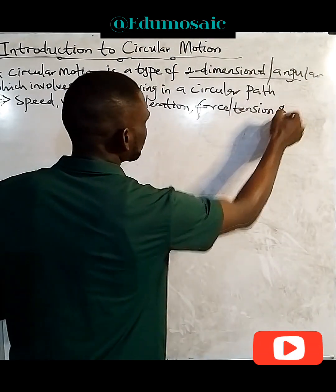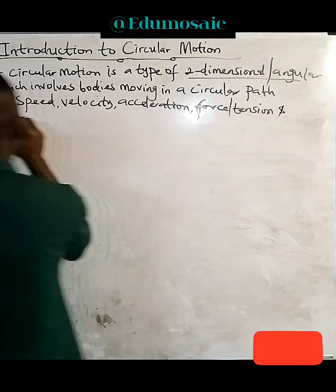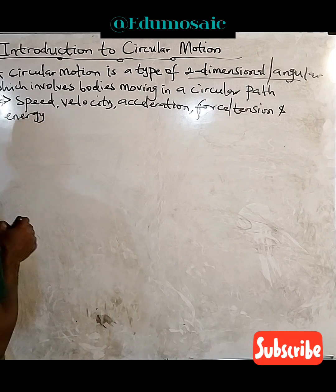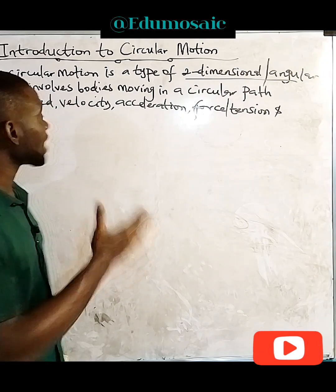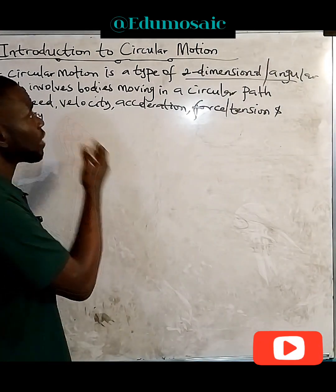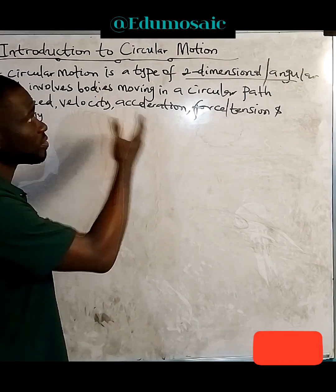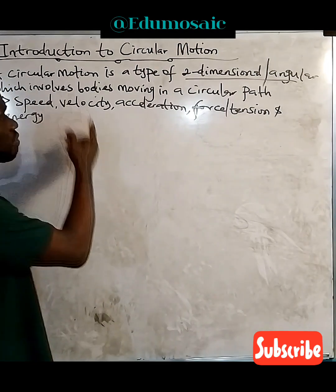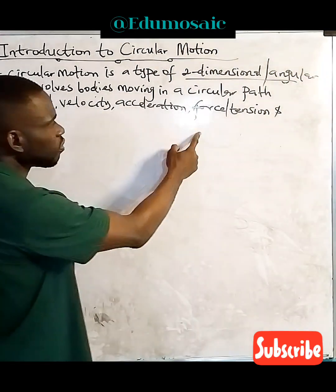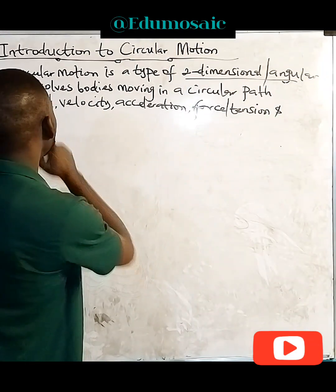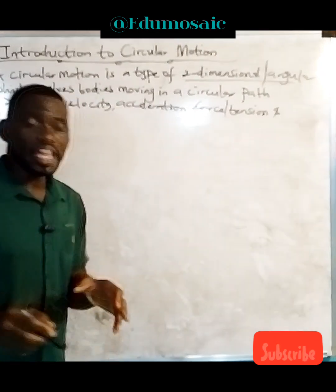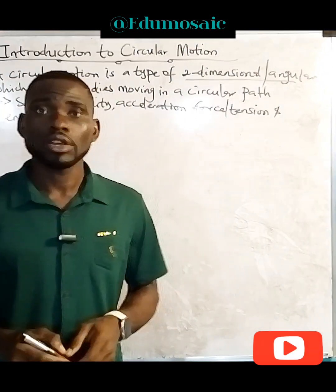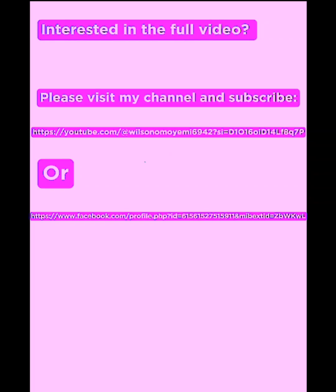We're also going to be discussing energy. So these are the terms we're going to be using when it comes to circular motion: speed, velocity, acceleration, force or tension, and energy. But today, as I said, we are not going into calculation — we're just going to be looking at the introduction.